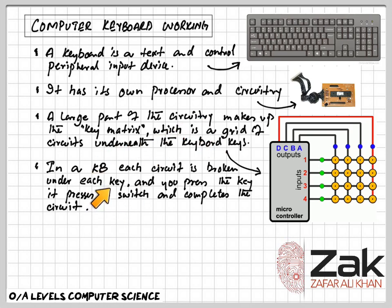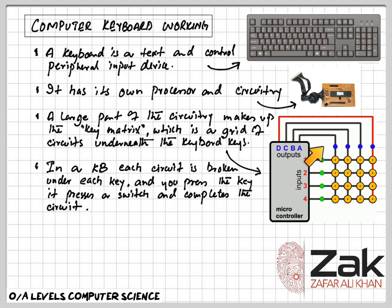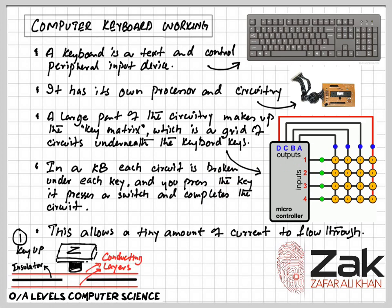In a keyboard, each circuit is broken under each key. When you press a key, it presses a switch and completes the circuit. So whenever we press a key, a switch is pressed and that completes the circuit, allowing a tiny amount of current to flow through.